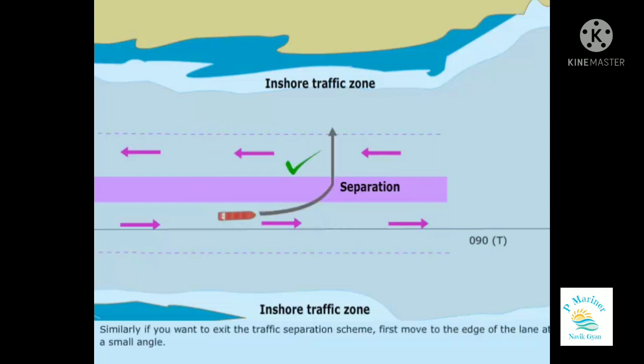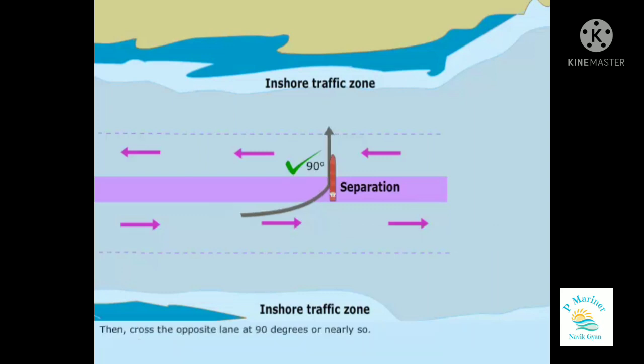Similarly, if you want to exit the traffic separation scheme, first move to the edge of the lane at a small angle. Then cross the opposite lane at 90 degrees or nearly so.